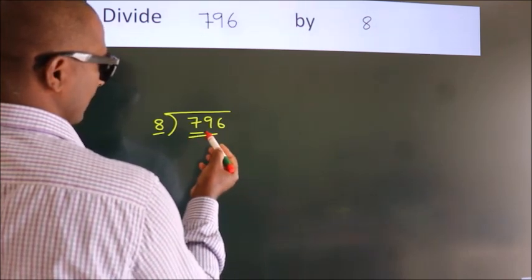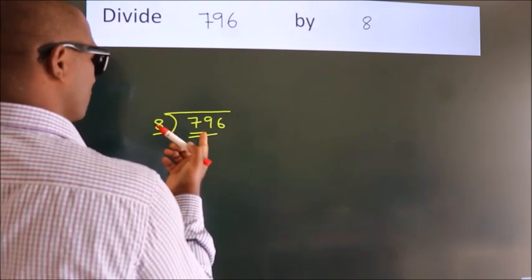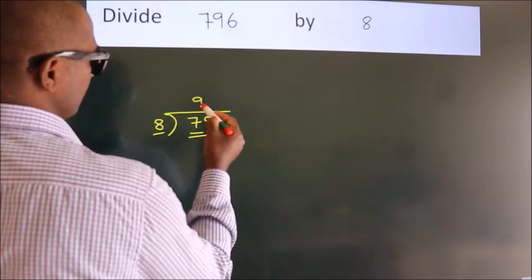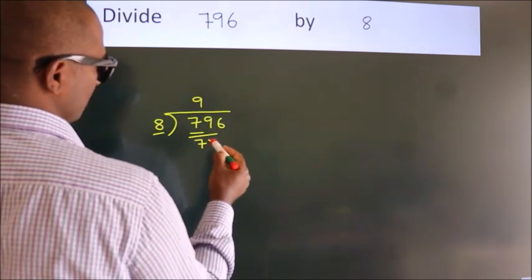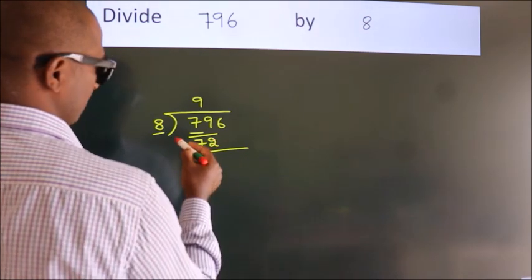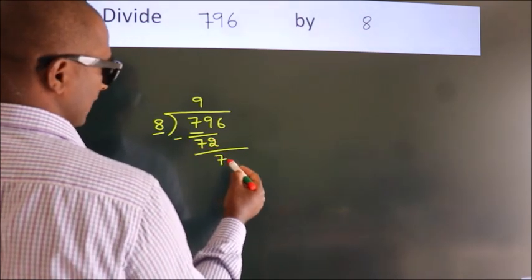79. A number close to 79 in the 8 table is 8 nines, 72. Now we should subtract. We get 7.